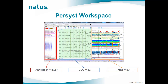The Persyst workspace is typically composed of three sections: the annotation viewer on the left, the EEG view in the middle, and the trend view on the right side. Users can customize the layout and save different workspaces. In the annotation viewer, all events collected during the recording are displayed in chronological order, including both EEG tech events entered by the system and user, and Persyst events such as spikes and seizures. Clicking on each event immediately jumps to that point in the EEG, shown in both the EEG view and the trend view as they are synchronized.